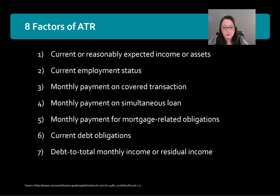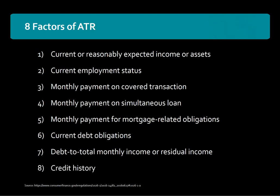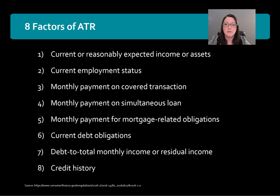Next is debt-to-total monthly income or residual income, defined as the amount of monthly income remaining after subtracting monthly debt obligations. Compensating factors may be considered here, and flexibility is expressly permitted by the lender. Finally is credit history. The ATR rule does not impose any minimum credit score or credit history for lenders, but credit history does need to be taken into account. Non-traditional credit references may be considered, but all must be documented in accordance with the guidelines. Those are the eight factors lenders must consider when underwriting a loan to meet the Ability to Repay rule.